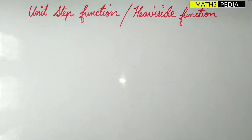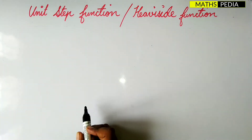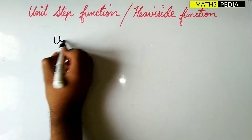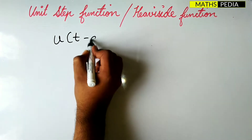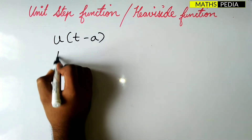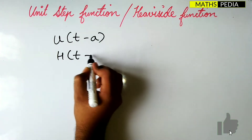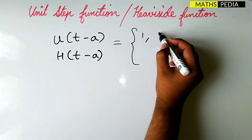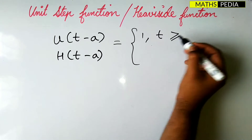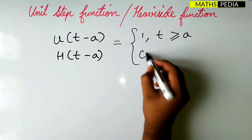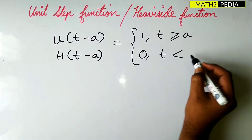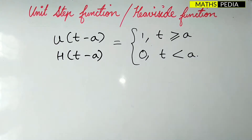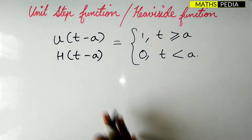In this video we are going to discuss the unit step function or Heaviside function. It is a discontinuous function defined as u(t-a) or h(t-a), which equals 1 when t is greater than or equal to a, and 0 when t is less than a, where a is a constant.